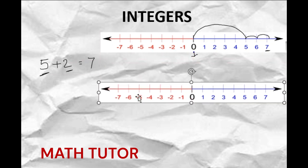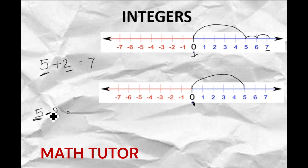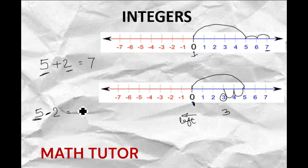In the same way, let us see 5 minus 2. Let us start from the origin, that is 0. We take a big jump to 5, and here we have minus 2. Minus means we have to go towards the left direction. So from 5 we go towards the left — 1 jump, 2 jumps — and we got 3. So 5 minus 2 equals 3.